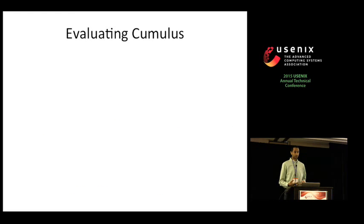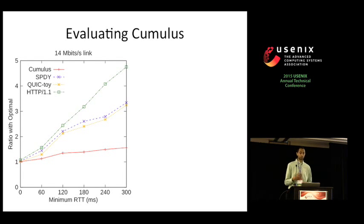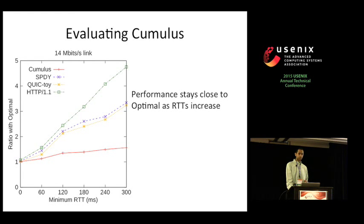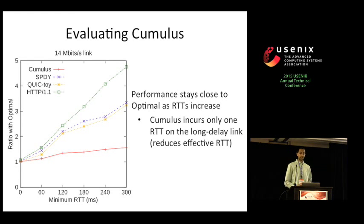To evaluate Cumulus, we loaded the Alexa top 500 pages over the same configurations as before. Results for a 14 Mbps link with RTTs from 0 to 300 ms show that performance with Cumulus stays much closer to optimal as RTTs increase, while the multiplexing protocols go further from optimal with increasing RTT. This is because Cumulus only incurs a single RTT between the local and remote proxy on that long delay link, reducing the effect of RTT experienced by the client browser.